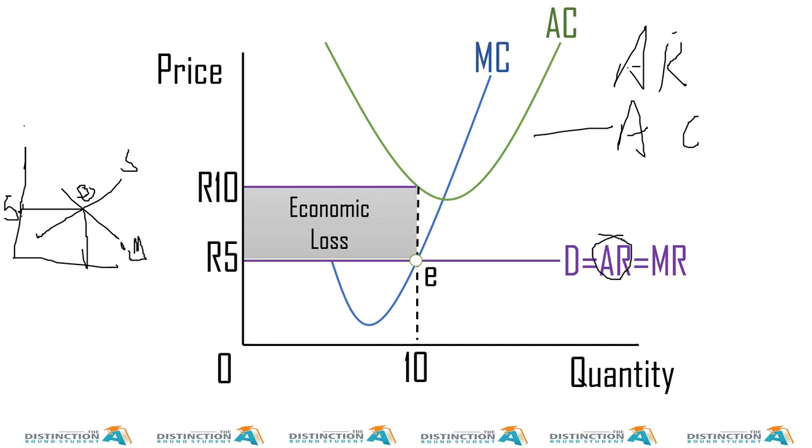Well, in this case, it will be what is our average revenue. Look here, it's five Rand. And what is our average costs? AC look here, our average cost here is 10 Rand. So basically, we are saying five minus 10 is equal to negative five.